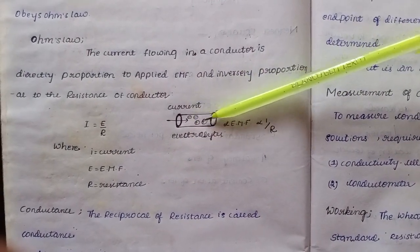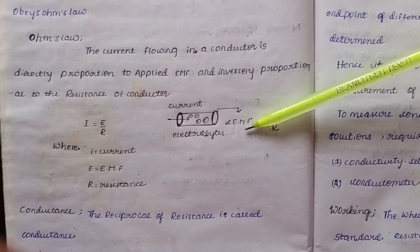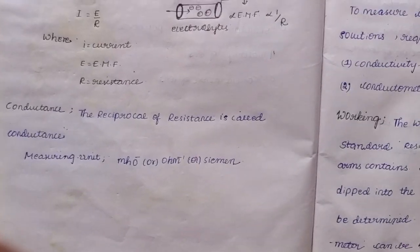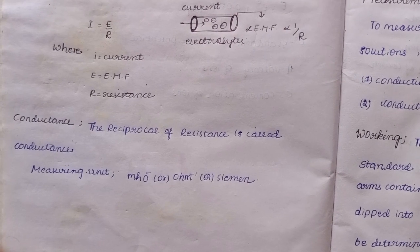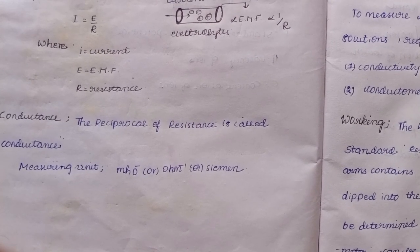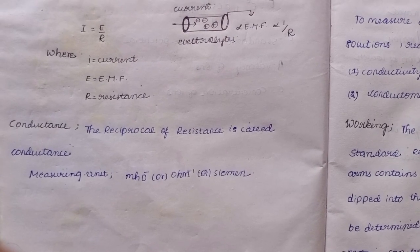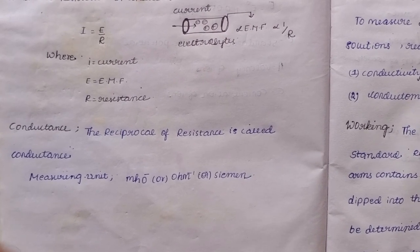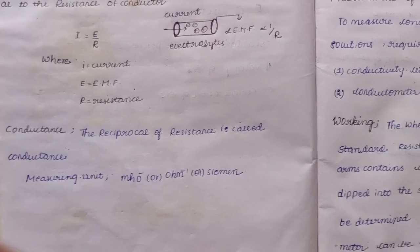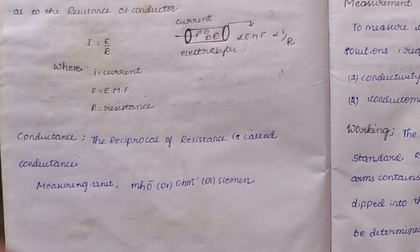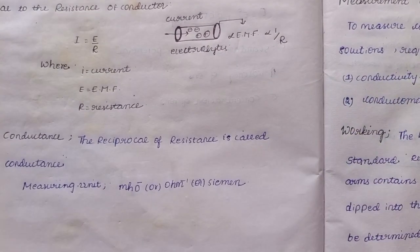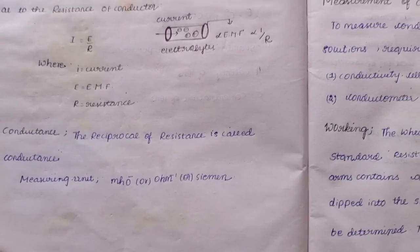In the conductor, the current is directly proportional to the electromotive force applied and inversely proportional to the resistance. The reciprocal of resistance is called conductance. Conductance is the ability to generate electric current. Its measuring units are Siemens, also written as ohm inverse or mho, or ohm inverse per meter.